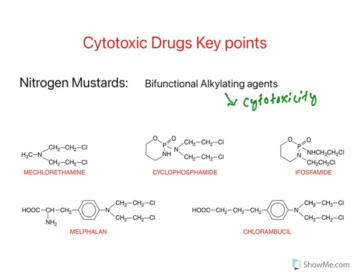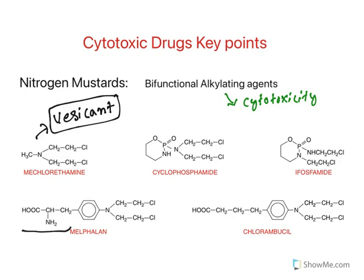Among the nitrogen mustards, mechlorethamine has the highest vesicant property — it causes very high amounts of burning sensation. Melphalan contains the amino acid alanine; 'alan' in melphalan indicates alanine amino acid.